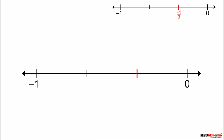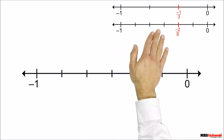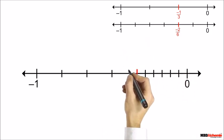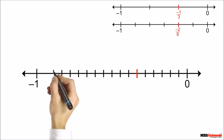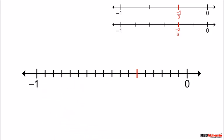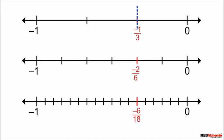If we further divide each of these three lengths into two equal parts, then the red mark represents minus 2 upon 6. If we further divide each small division into three equal parts, then the length between 0 and minus 1 is divided into 18 equal parts and the red mark is sixth on the left of 0, thus it represents minus 6 upon 18. On comparing, we see that in all the number lines the mark is at the same distance from 0, meaning each rational number has equal value. These types of rational numbers are called equivalent rational numbers.